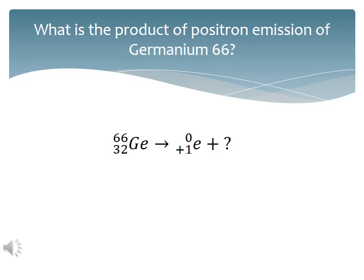Atomic number goes down by 1. So find element 31 on the periodic table. Positron emission converts germanium-66 into gallium-66.